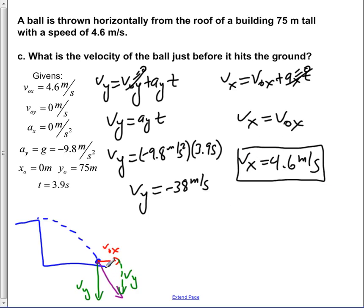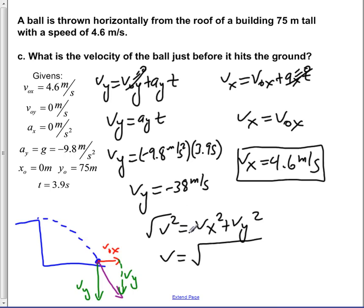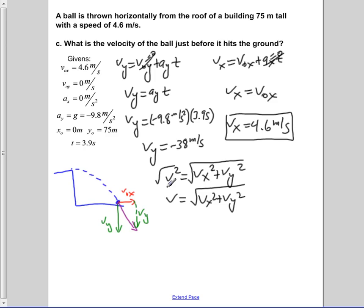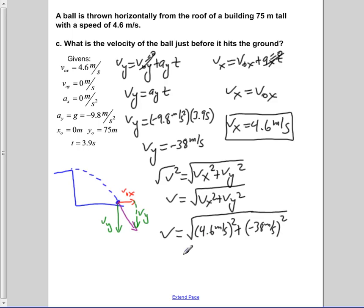To solve for the resultant velocity, we apply the Pythagorean theorem: V squared equals Vx squared plus Vy squared, so V equals the square root of Vx squared plus Vy squared. Plugging in our values, V equals the square root of (4.6 meters per second) squared plus (negative 38 meters per second) squared, which gives us V equal to approximately 38.3 meters per second.